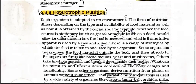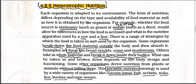Now heterotrophic nutrition - this includes us humans as well as many types of fungi and others. Each organism is adapted to its environment. The form of nutrition differs depending on the type and availability of food material and how it is obtained by the organism. For example, whether the food source is stationary such as grass, or mobile such as deer. Grass is eaten by cows and goats - these are stationary food sources. Mobile food like deer and rabbits are eaten by carnivorous organisms.